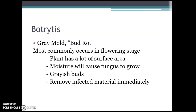Air purifiers can help. If you see any grayish buds, remove that infected material immediately. If you're growing outdoor, Botrytis can occur when your flowering plants get a heavy rain — if possible, harvest before the rain. Growers have had to decide whether to harvest a little early for a slightly less potent product, or wait after the rain and risk Botrytis. It's something to consider with outdoor growing.